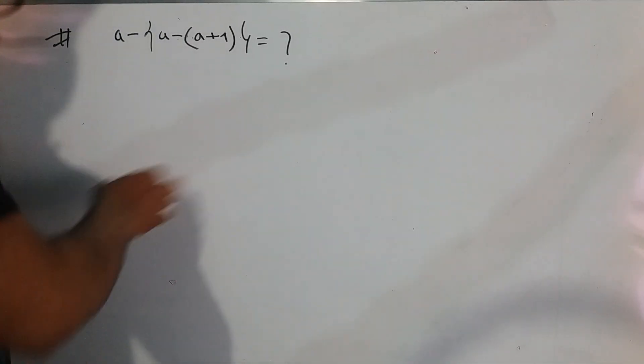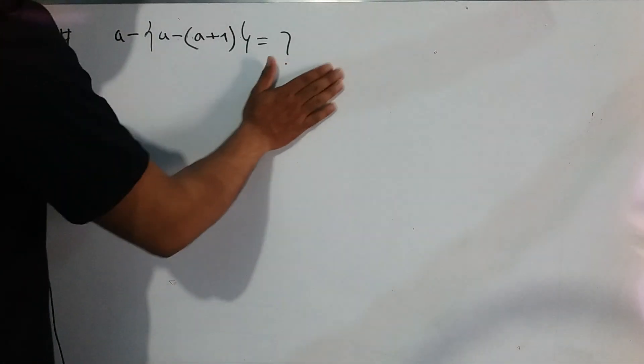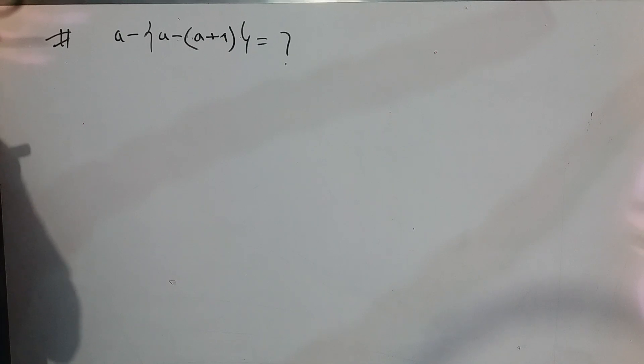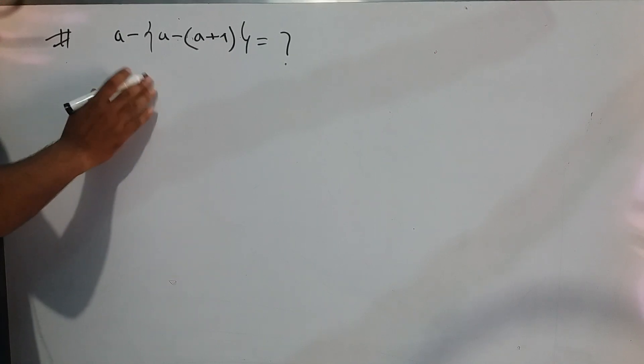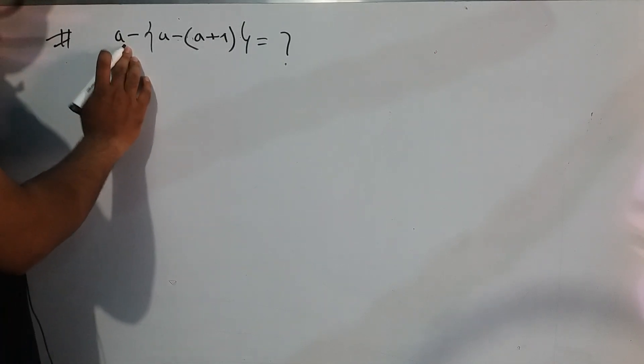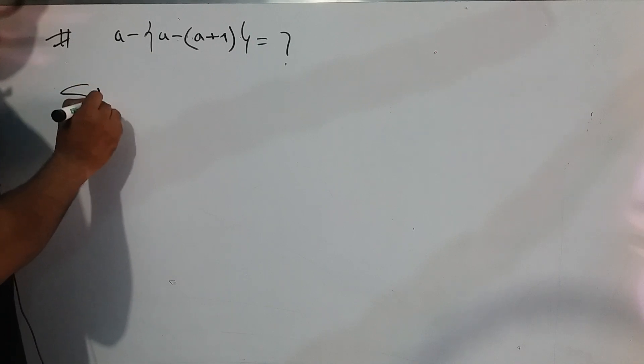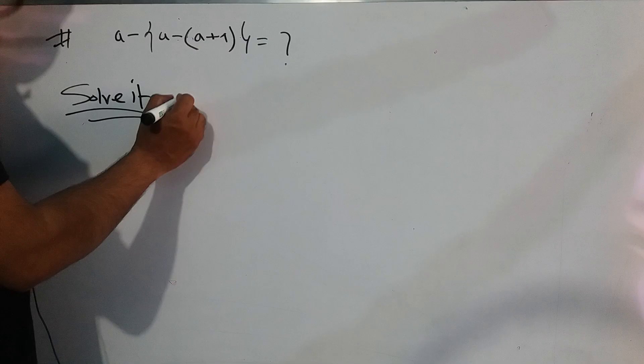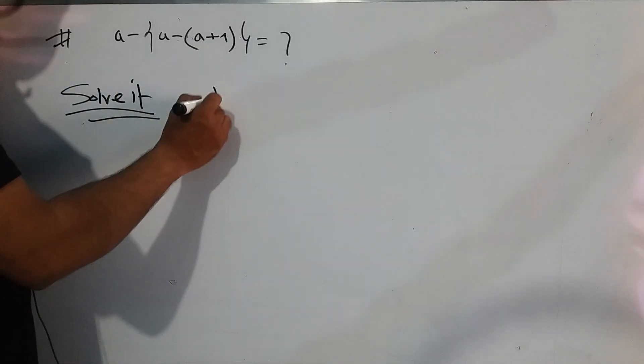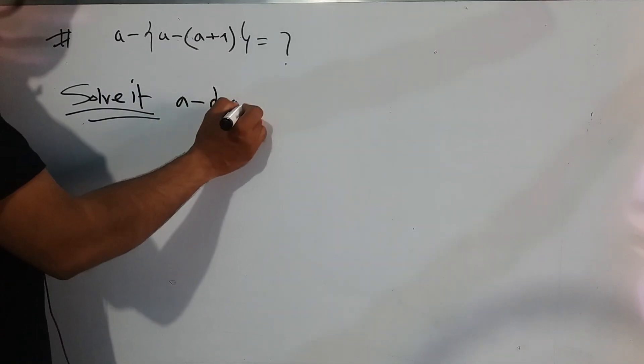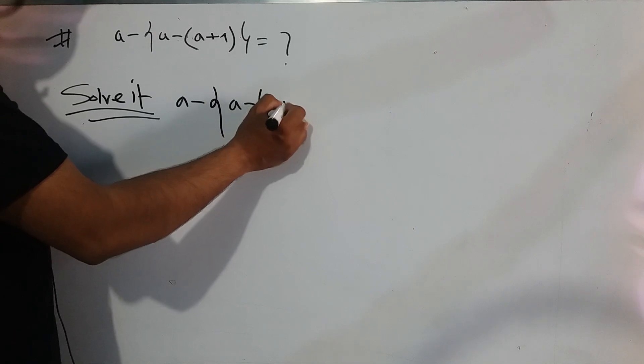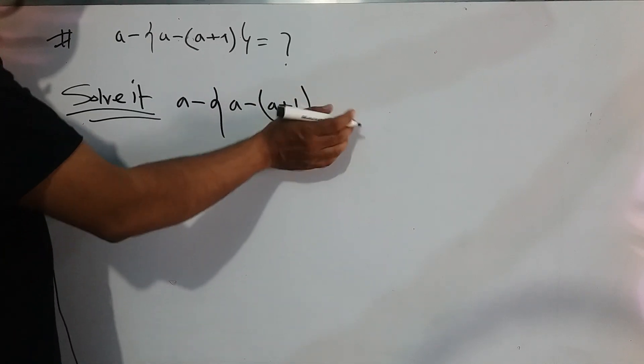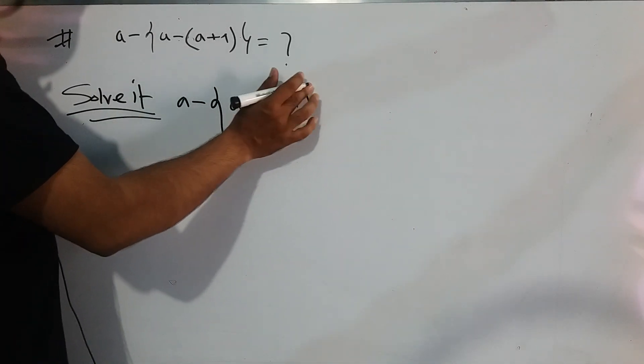Welcome back again. Right now we are following the math on this board. So solve it: a minus second bracket, a minus first bracket, a plus one, first bracket closed, and finally close the second bracket.